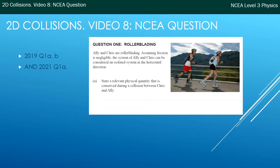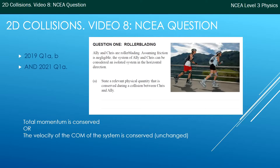When we're talking collisions, we're thinking usually momentum. So you can say that total momentum is conserved in this case. But you could also say, for an equally valid answer, that if they were to collide, their centre of mass velocity is unchanged. So the velocity of the centre of mass of the system is unchanged. Those are two ideas we've learned about in this series.